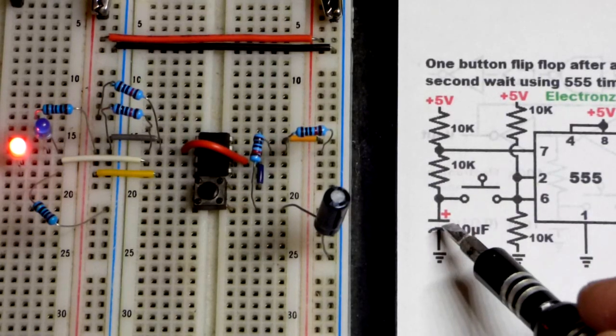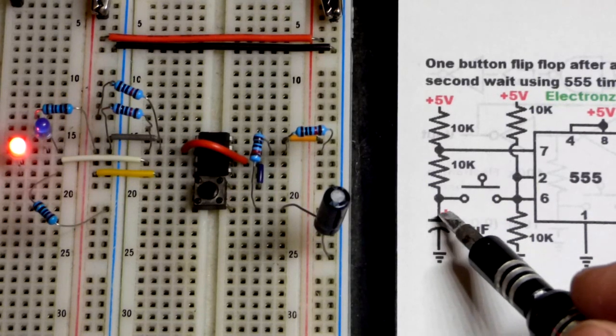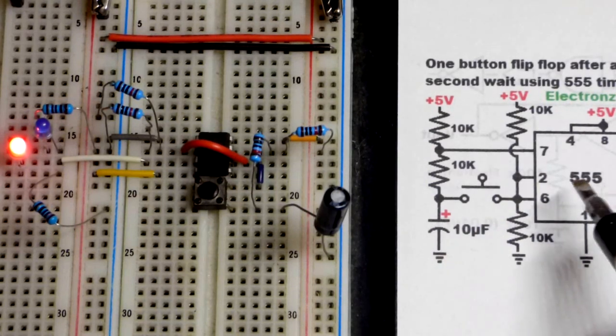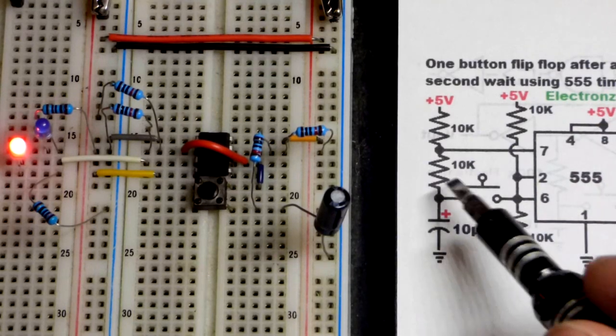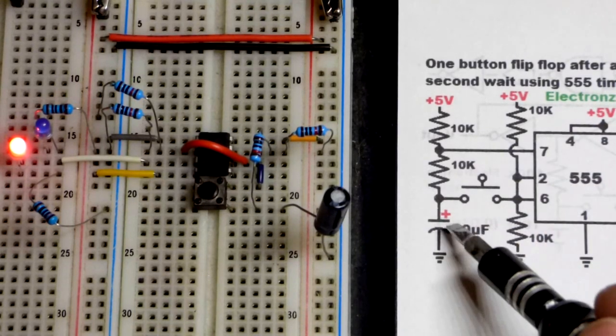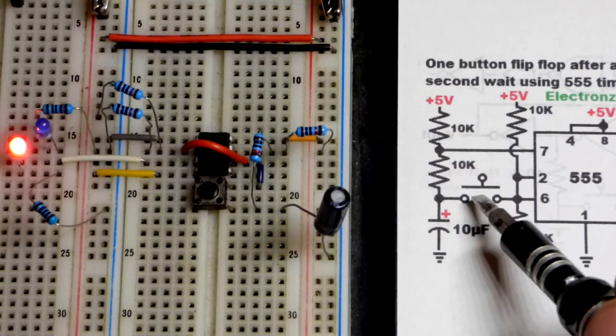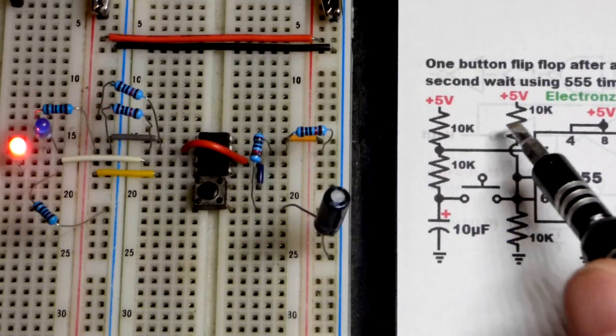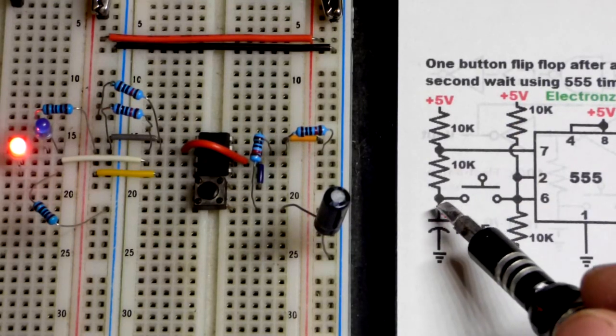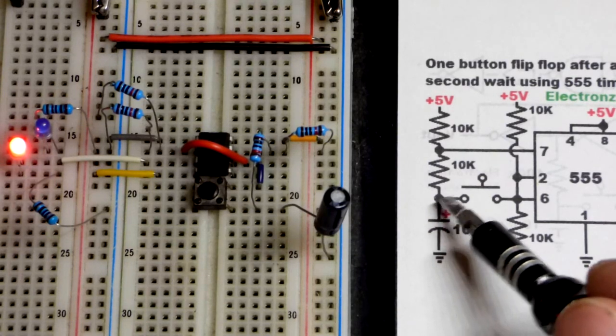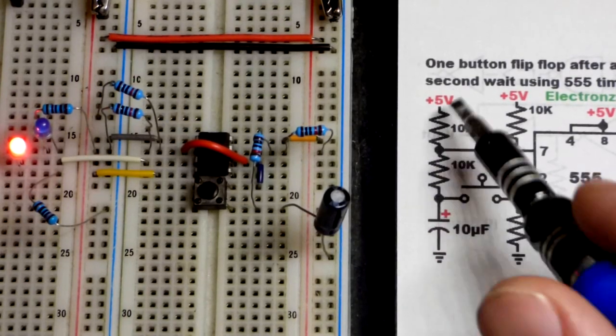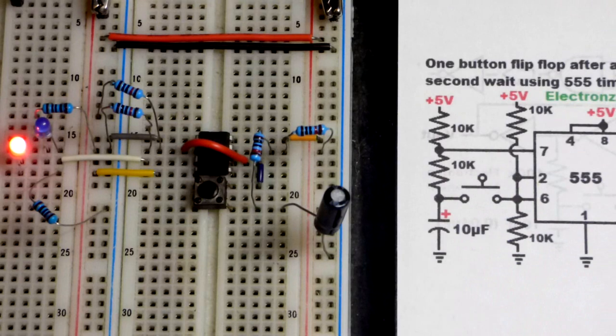Until we close the switch, then pin two will see instantly that we're at zero volts, less than one-third supply voltage, then it sets the output high as close to five volts as it can. This stops discharging. If we keep holding this, we got that voltage divider which should keep it from charging to two-thirds supply voltage. But when we release it, it can just keep charging until it gets to the full supply voltage.